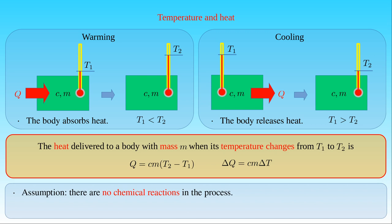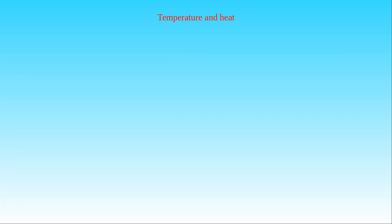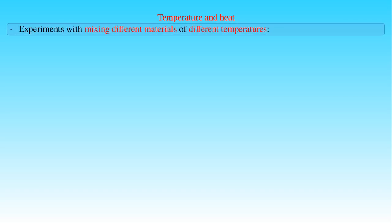These formulae also show that the delivered heat to a body is negative for cooling. When the initial temperature T1 of the body is greater than its final temperature T2, the body delivers heat to its surroundings. We can draw the same conclusion on the transport of heat from the following experiment mixing different materials with different temperatures.